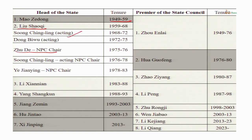Zhu De was one of the leaders of the first generation of the Communist Party, along with Mao Zedong and Zhou Enlai — one of the three great leaders of the first generation. He remained and died in 1976. He was again succeeded by Song Qingling, who was vice chairwoman of the National People's Congress and in that capacity was the acting head of state again. Then she was replaced by Ye Jianying, who succeeded her as head of state.